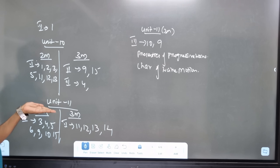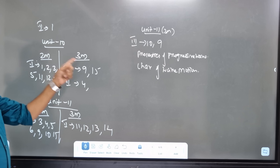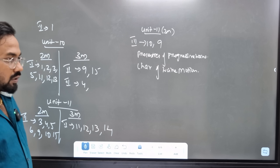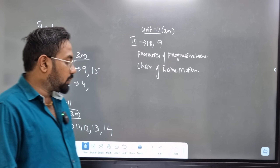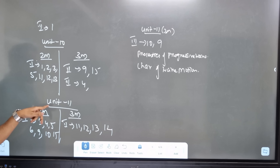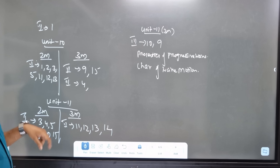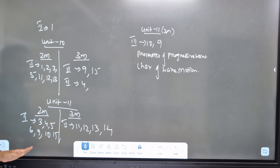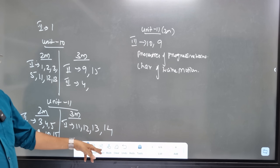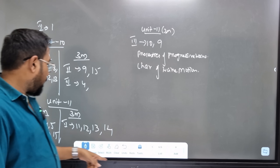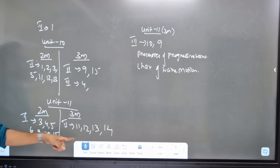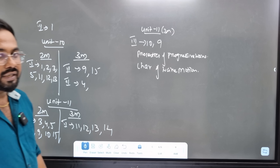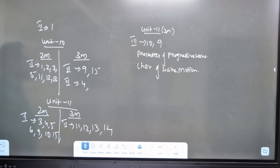Unit 10 has 2-mark and 4-mark questions. Unit 11 has 2-mark questions in the second topic, and a 3-mark in the third topic. Topics include Doppler effect, redshift, blueshift, end corrections, factors affecting sound, and sound in gases. These are 3-mark questions.